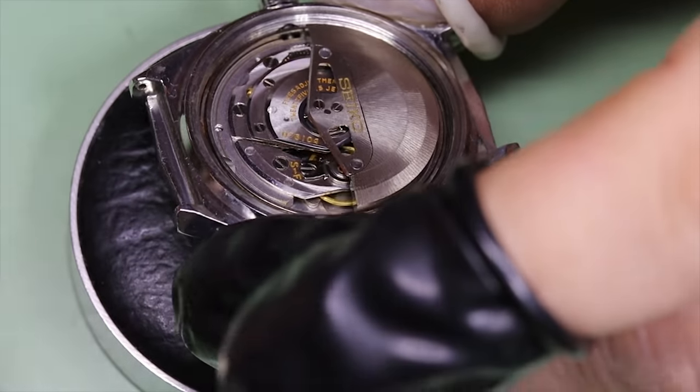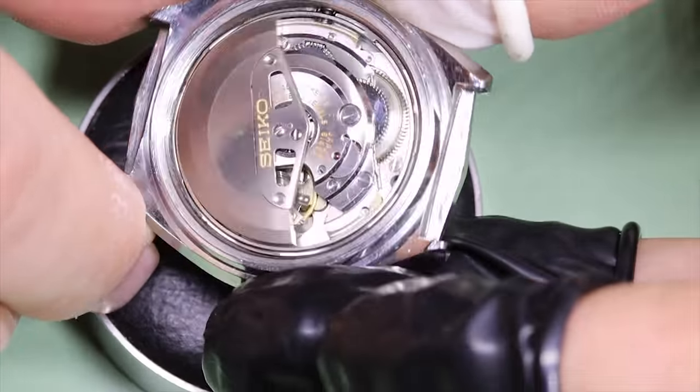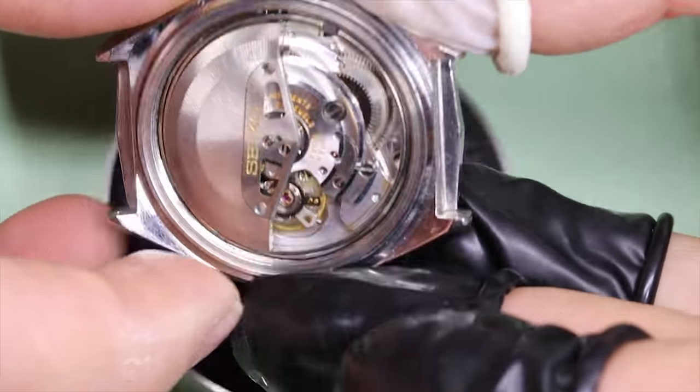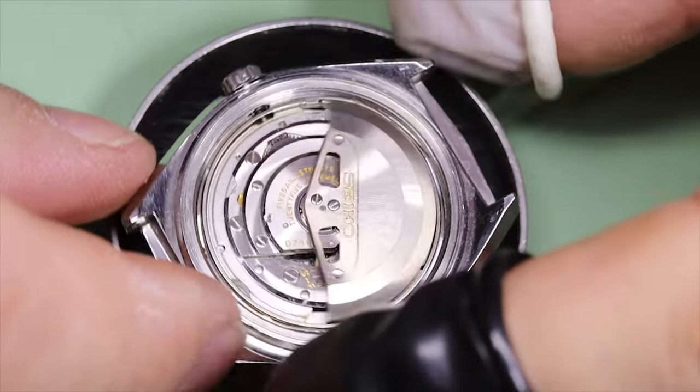There's no substitute for a good tool. So now we can open the case, and there we have it, the Seiko 6145A, 36,000 beat rate.